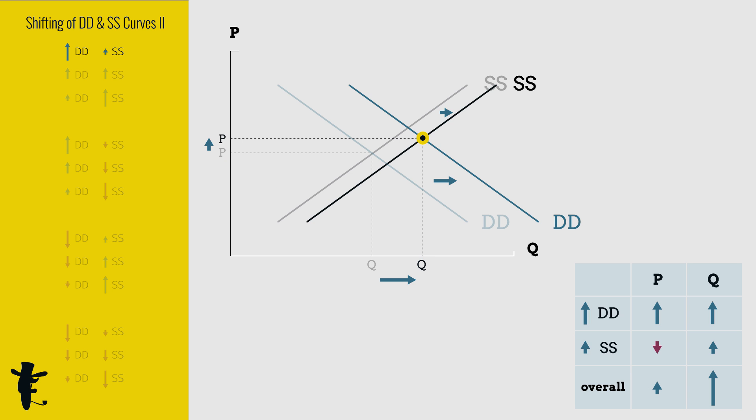Another way to think about this: because the increase in demand is huge, the price increase is huge. The increase in supply is small, so the price decrease is small. Add up these opposing effects.